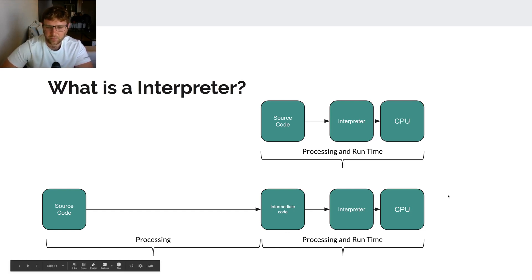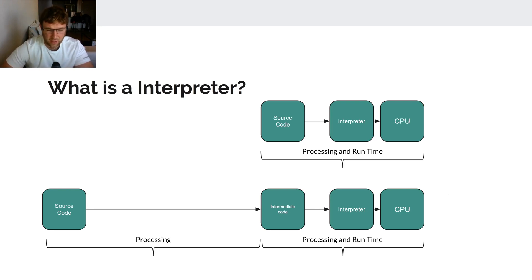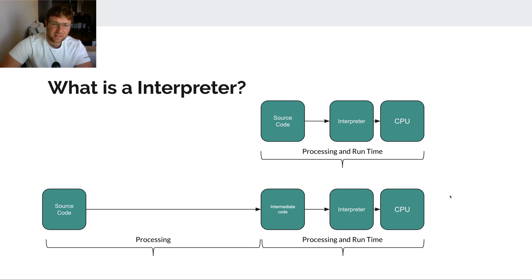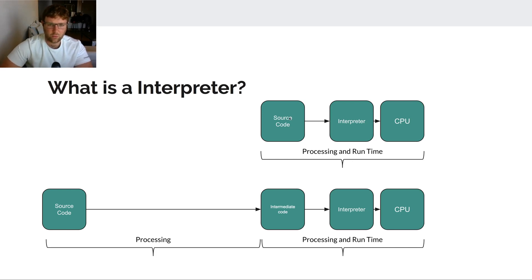Web browsers do this exact thing — any web page that uses JavaScript sends you that JavaScript and the web browser itself interprets what that code needs to do and executes it on your CPU. So Java and JavaScript are both interpreted languages. Things like PHP or bash are run directly line by line by the interpreter. Sometimes these are also called scripting languages.